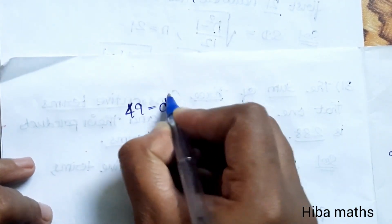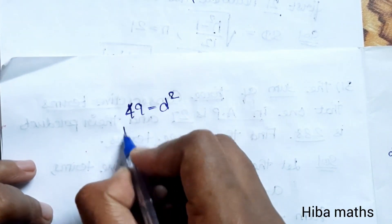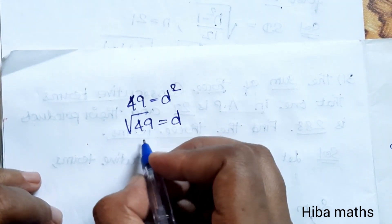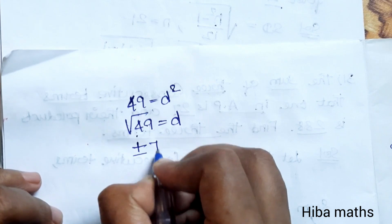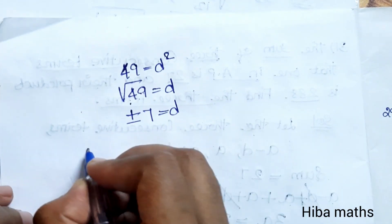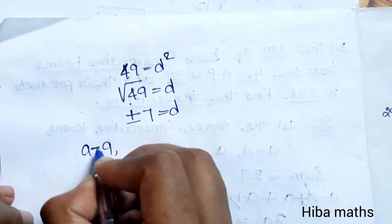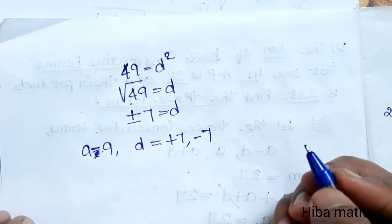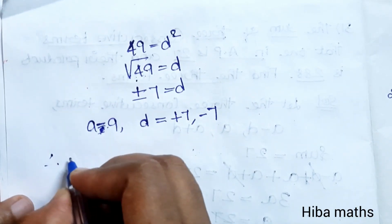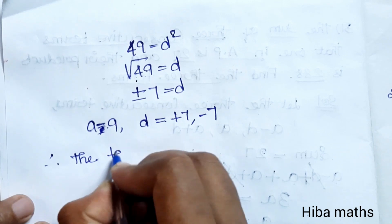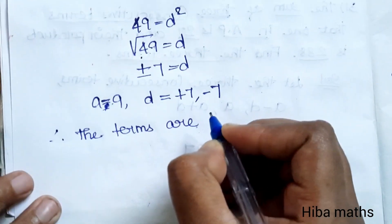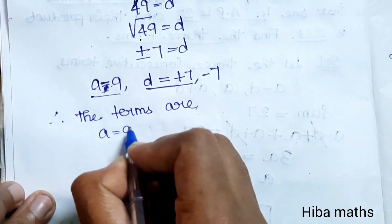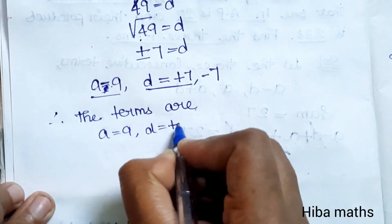Therefore D squared equals 49, so the square root of 49 gives D equals plus or minus 7. With A equals 9 and D equals plus or minus 7, we can find the three terms.